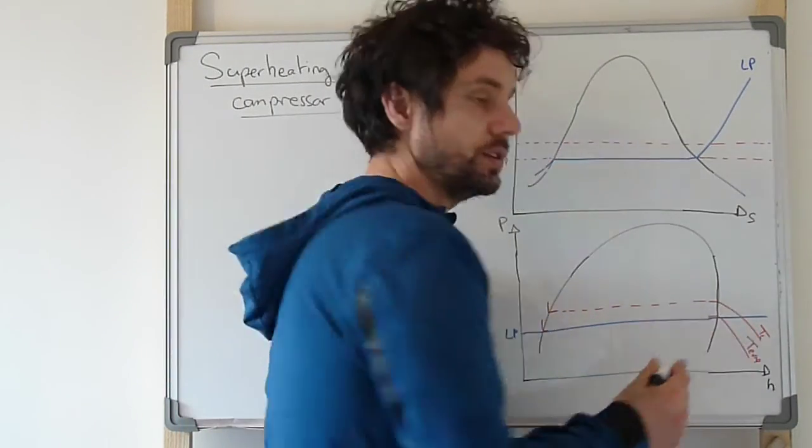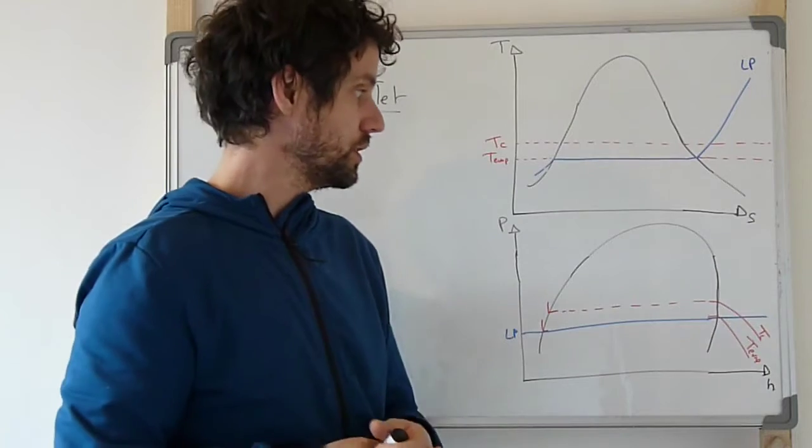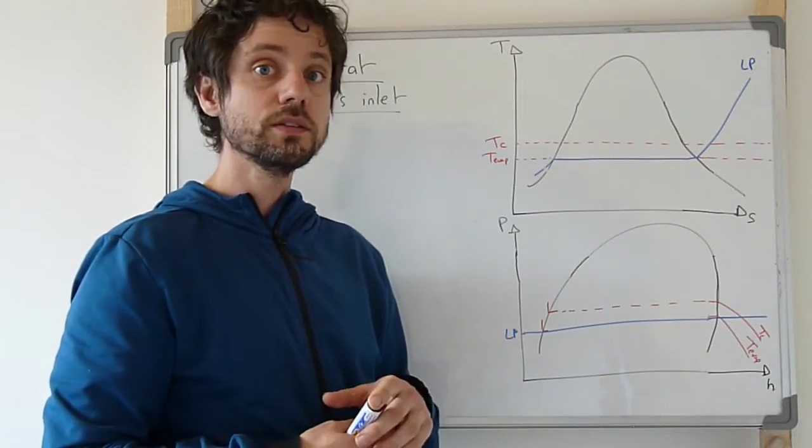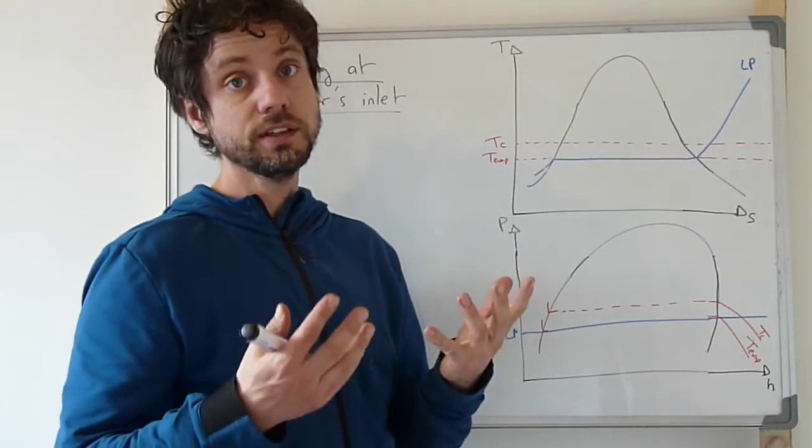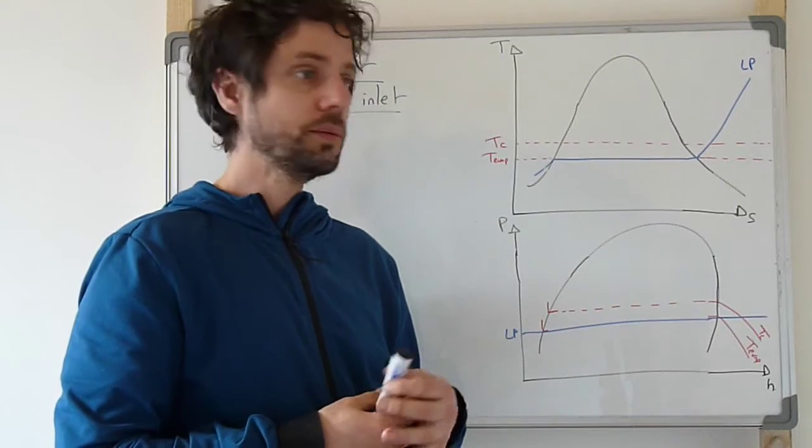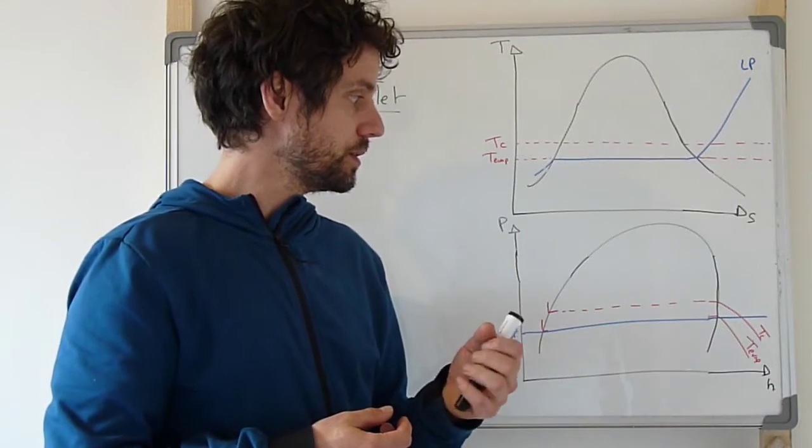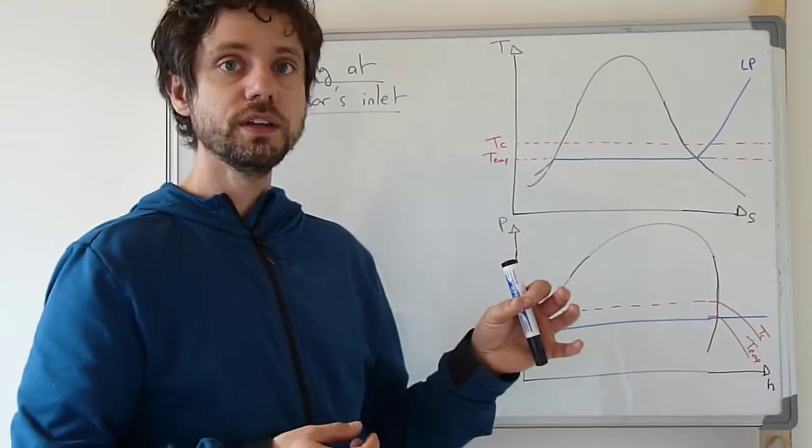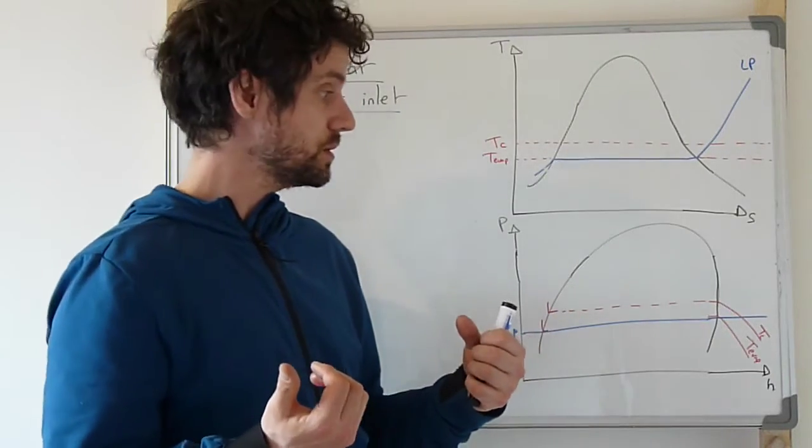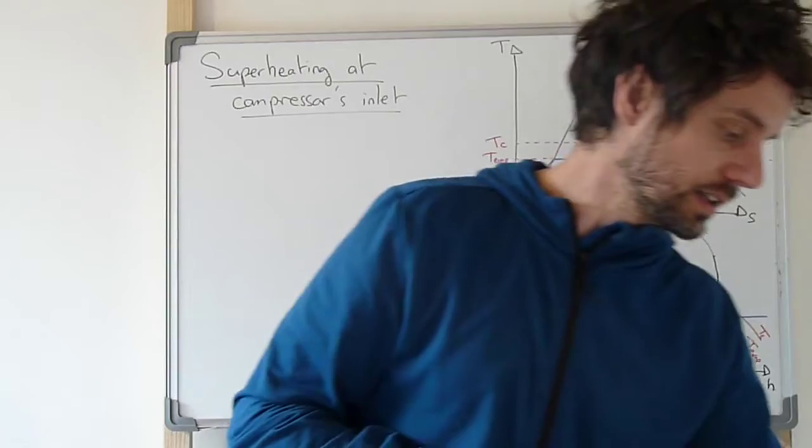But we want to increase a little bit more at constant pressure the temperature at the exit of the evaporator in order to avoid having droplets if the flow is not fully homogeneous. Because the working fluid is exchanging heat or receiving heat from the cold source, there is a limit that cannot be reached.